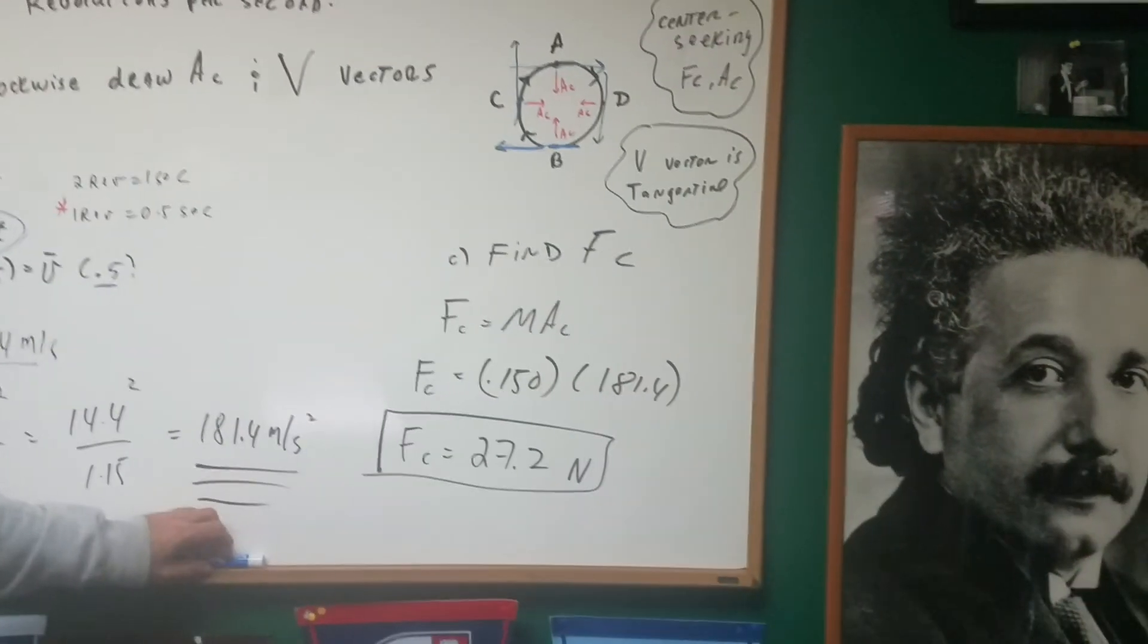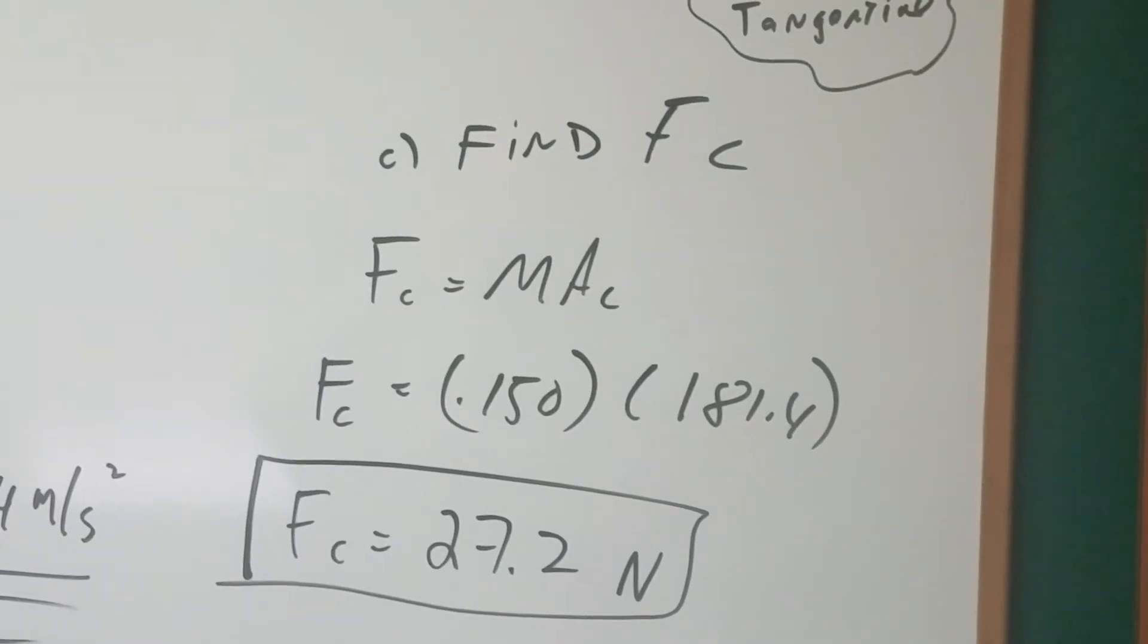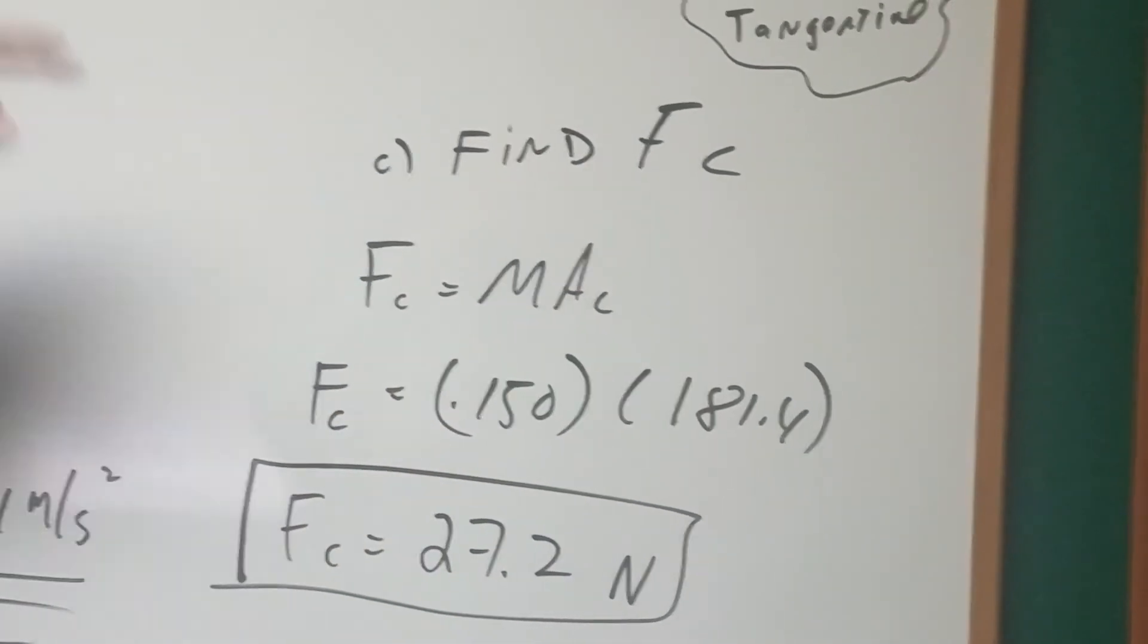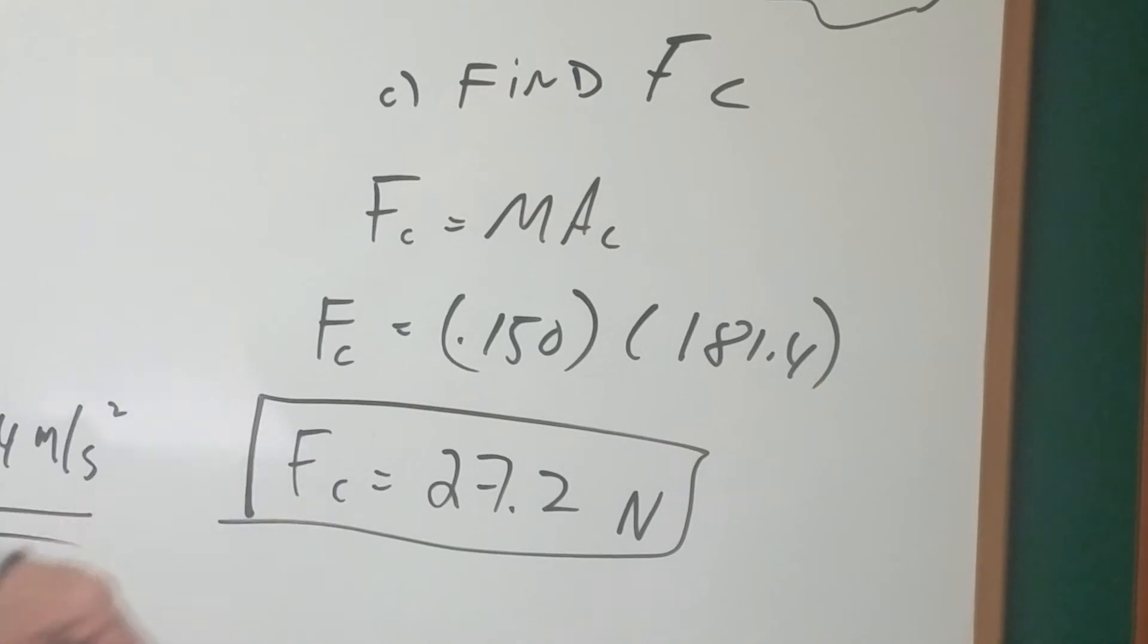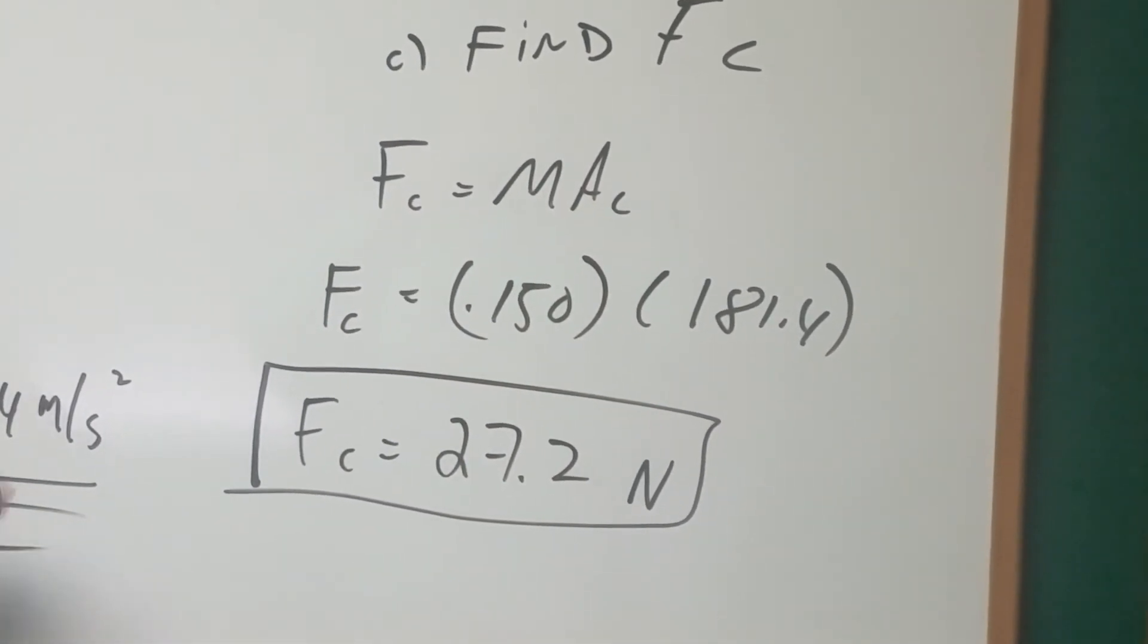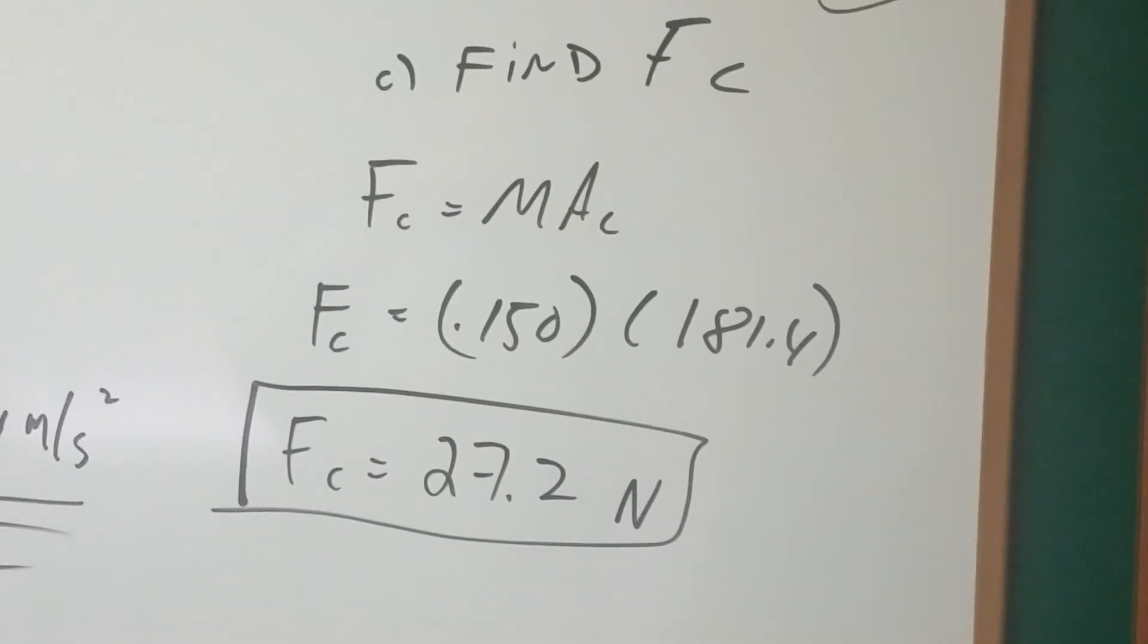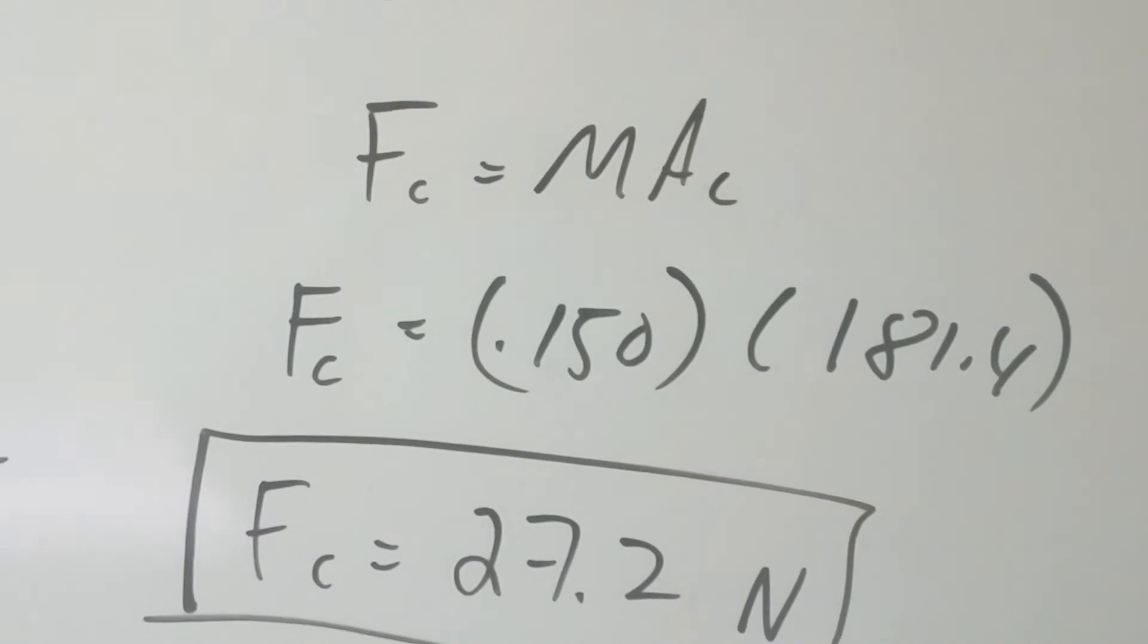Finally, find the centripetal force. I'm going to use F = ma for that. We know the mass is 150 grams converted into kilograms. The centripetal acceleration we already found to be 181.4 meters per second squared. So we come out with the final answer of 27.2 Newtons.